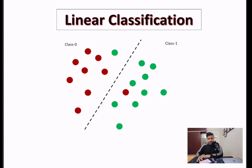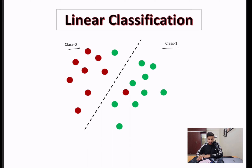Linear classification is basically a next step from linear regression, where we were trying to regress to a straight line given all the data points that we had. In linear classification, what we try to do is we try to divide the dataset into two different classes. So we will talk about binary classification — we'll have two classes.